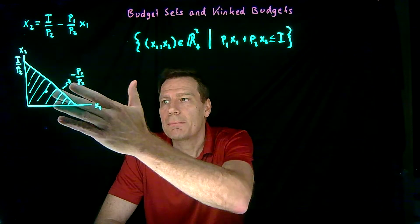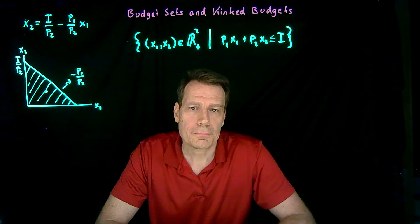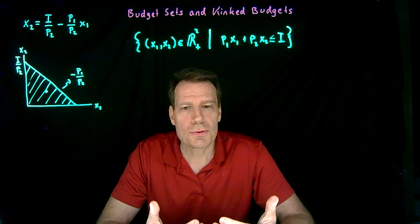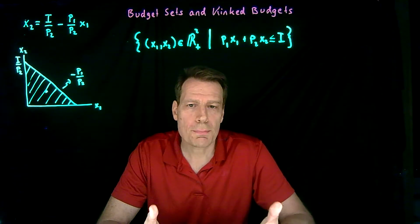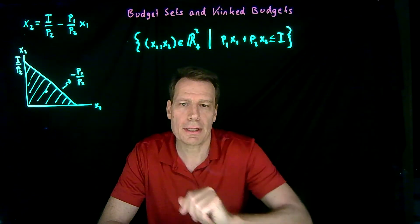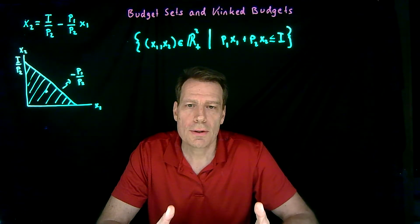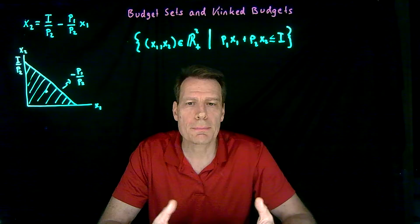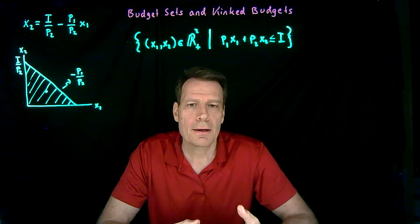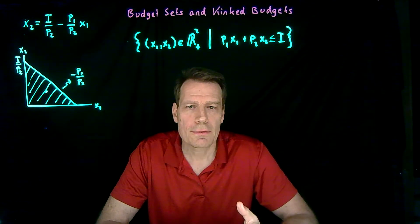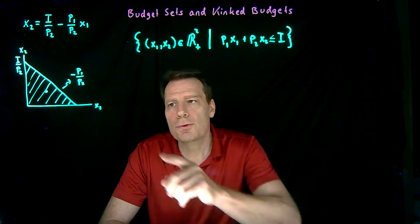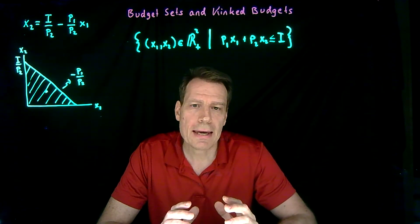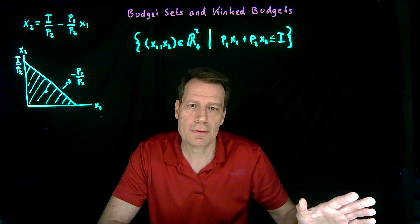That is the typical shape of a budget set. Throughout this, we've assumed that no matter how many goods you buy, you always face the same prices — that's what gives us a nice linear budget line. But there are circumstances where the prices you face may change depending on how much of the good you buy, with interesting policy applications later. The simplest scenario is the case of a coupon: suppose you have a coupon where for the first 10 units of x1 you only pay half price, but full price for everything beyond that.